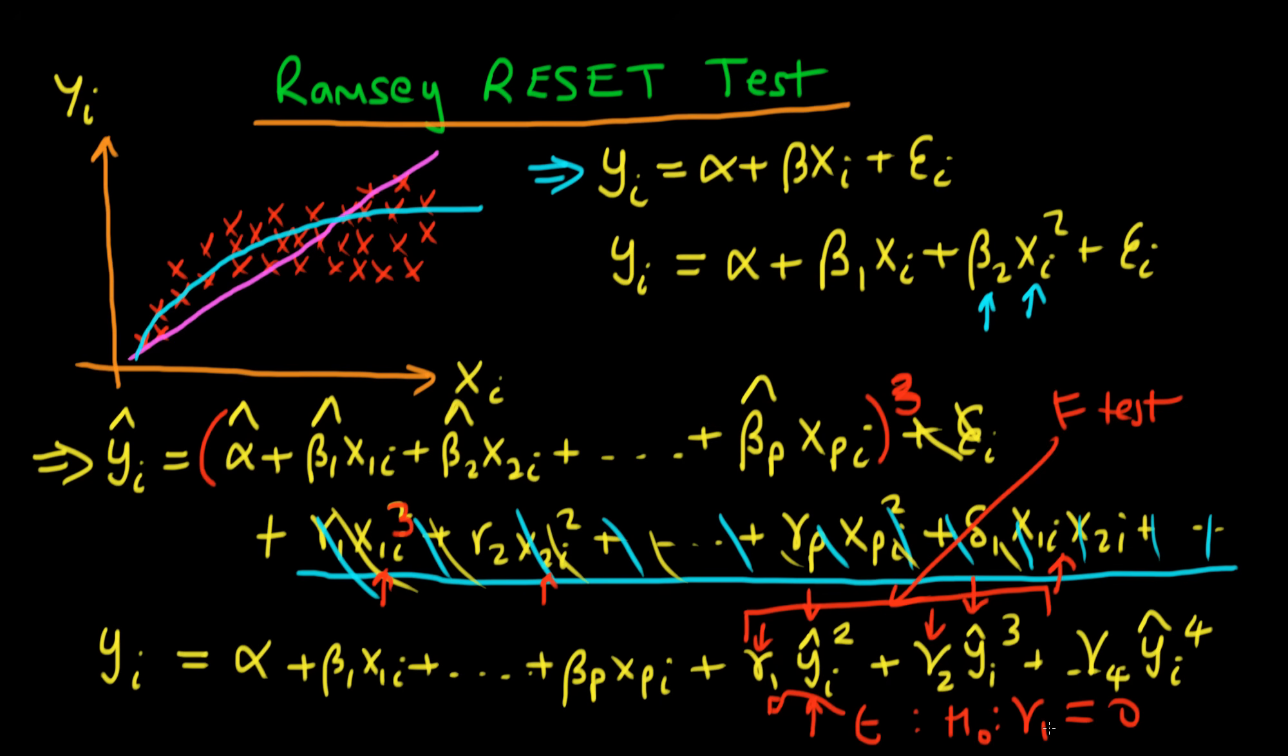But you can see how the Ramsey RESET test circumvents the problem which we had for adding each of the individual quadratic terms which we would have had to do in our original way of thinking about functional misspecification. Essentially we only have to add one extra term for each order of extra functional misspecification we're testing for. So that's the benefit of the Ramsey RESET test.